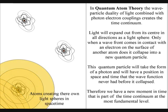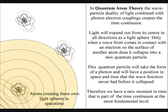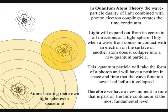This quantum particle will take the form of a photon and will have a position in space and time that the wave function never had before it collapsed. Therefore, we have a new moment in time that is part of the time continuum at the most fundamental level, represented by the quantum wave particle function.